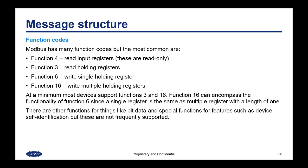Modbus has function codes to transmit data. The most common are: Function 4, which is a request to read input registers (read-only registers); Function 3, which is to read holding registers; Function 6, which is to write a single holding register; and Function 16, which is to write multiple holding registers. At a minimum, most devices will support Functions 3 and 16. Function 16 can encompass the functionality of Function 6 since a single register is the same as multiple registers with a length of 1. There are other functions for bit data and special functions like device self-identification, but these are not frequently supported.